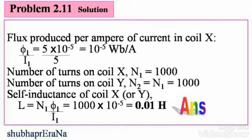Flux produced per Ampere of current in coil X is φ₁/I₁. Since we are calculating the flux produced per Ampere, we divide it by I. So φ₁/I₁ = 5×10⁻⁵ divided by 5, which gives you 10⁻⁵ Weber per Ampere.